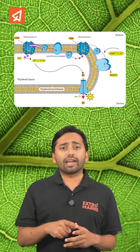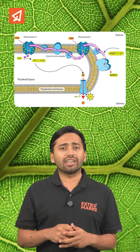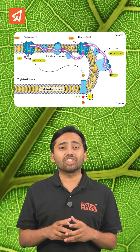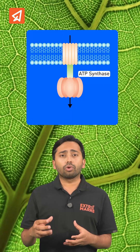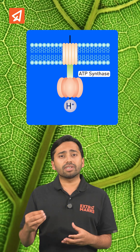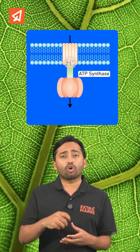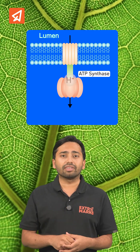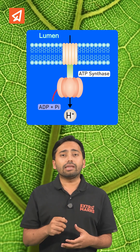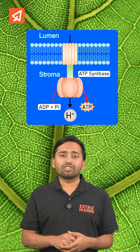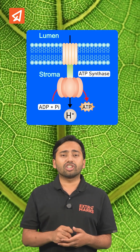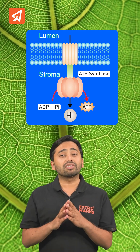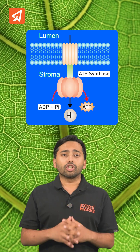Electron flow during the light reaction increases the proton concentration inside the thylakoid lumen. And when these protons go back from the lumen via ATP synthase, ATPs are produced in the stroma.